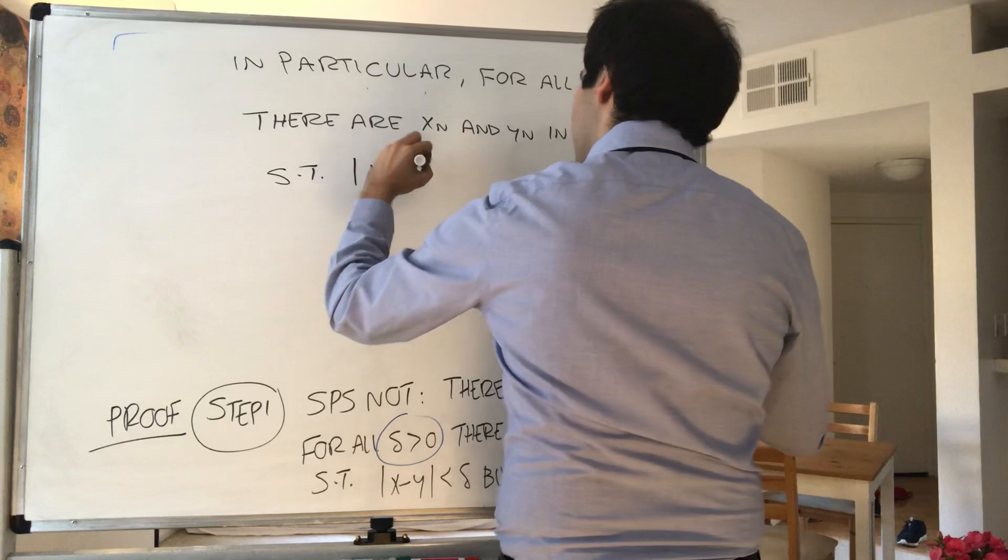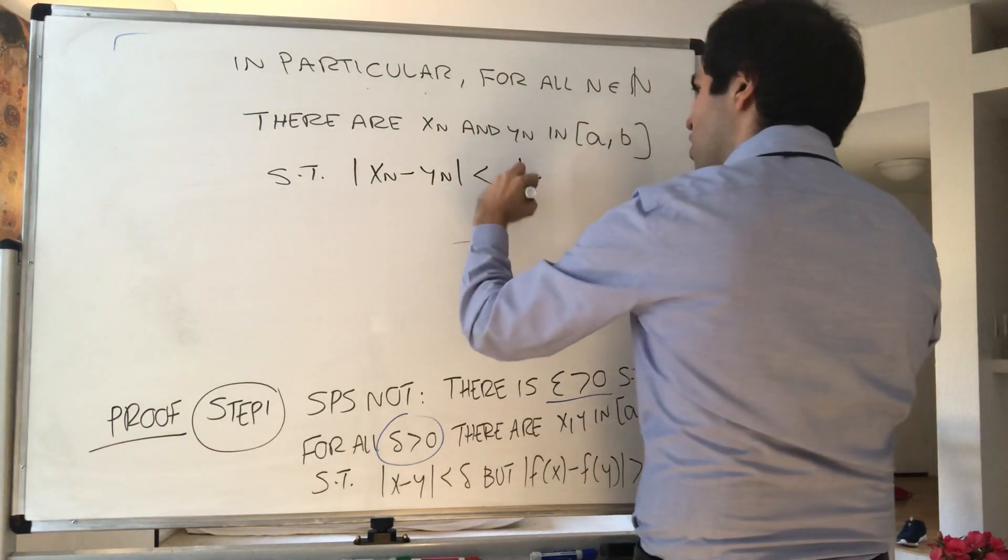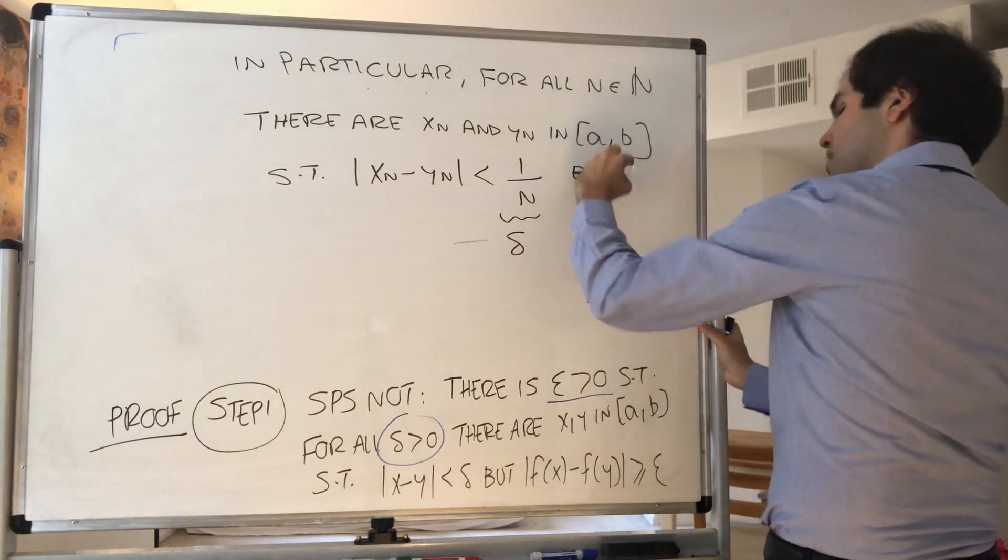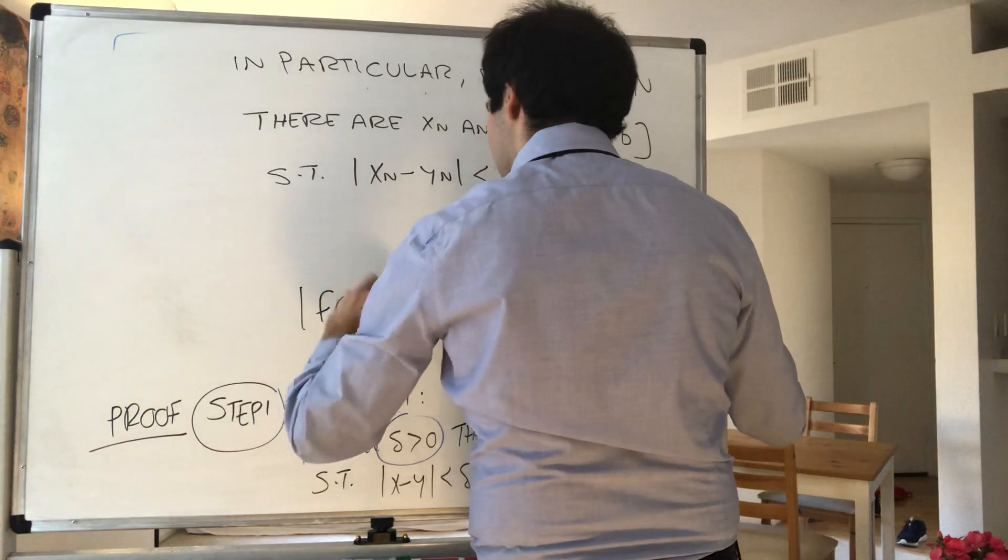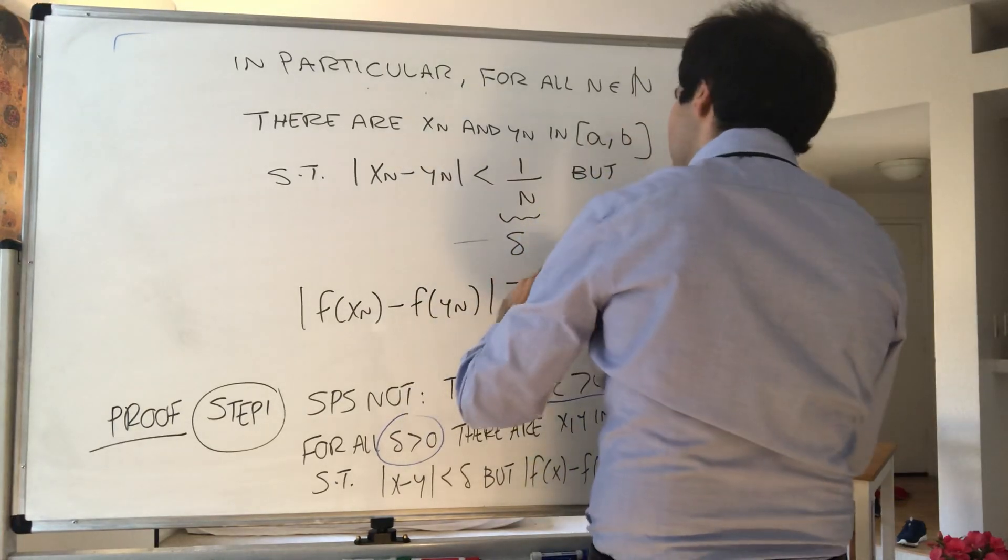So |xₙ - yₙ| < delta, which here is 1/n, but the outputs are at least epsilon apart. So |f(xₙ) - f(yₙ)| ≥ epsilon.